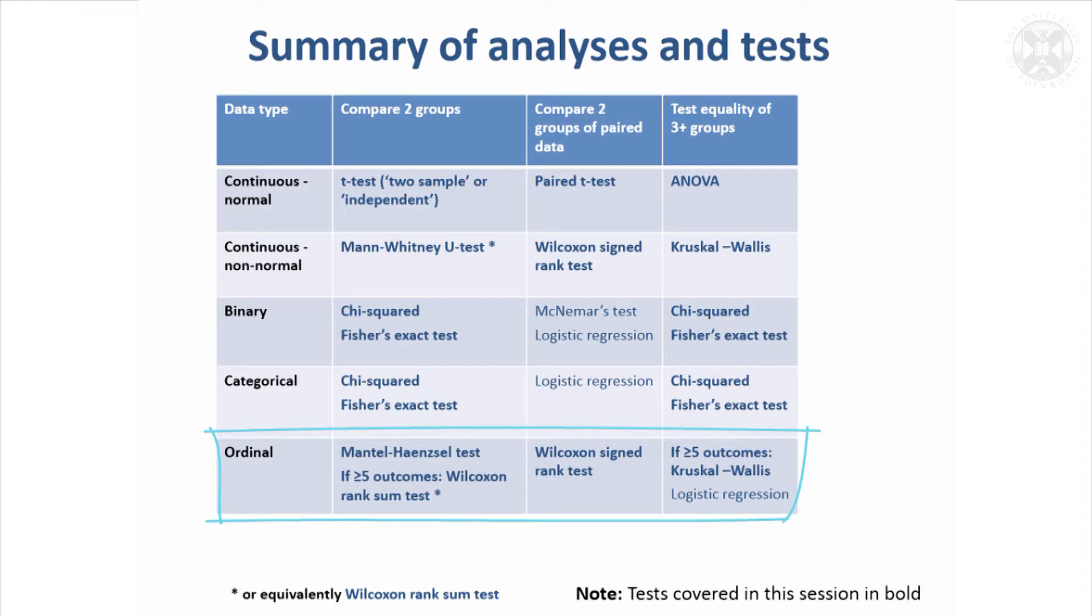And for pairs of data, then the Wilcoxon signed rank test is appropriate, so you're just treating the data as ranked rather than categorical. And because you're treating it as ranked, you can use the Kruskal-Wallis test if there's five or more outcomes.